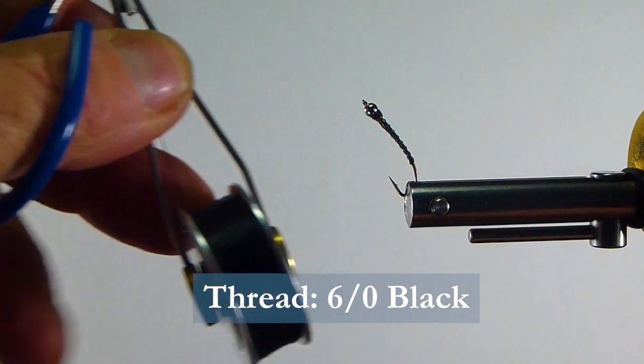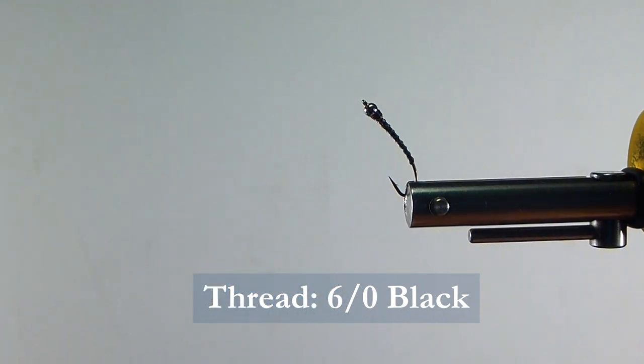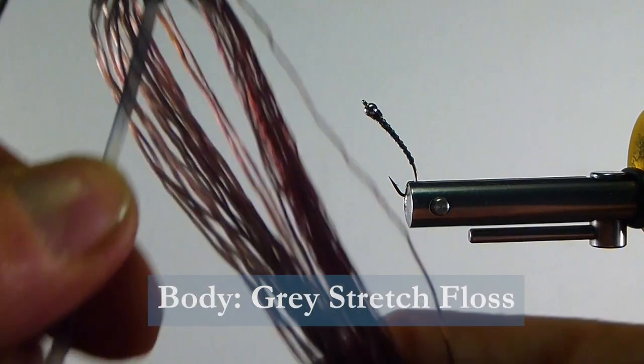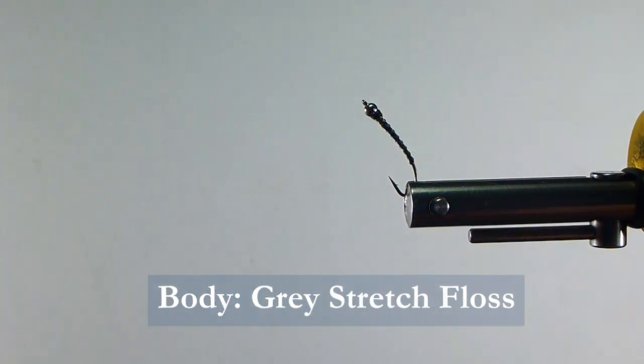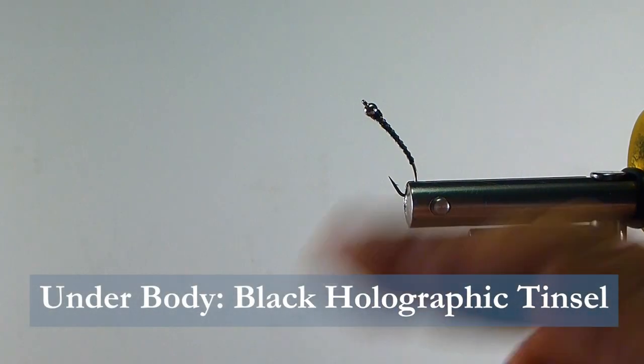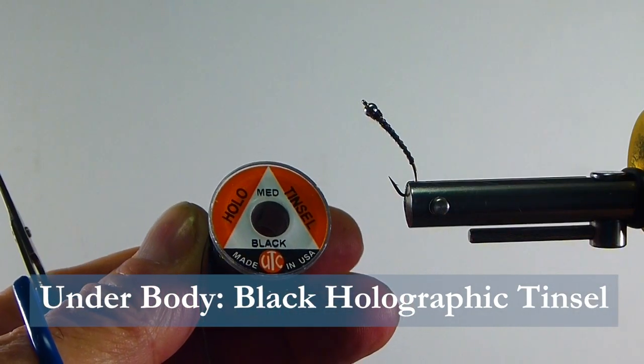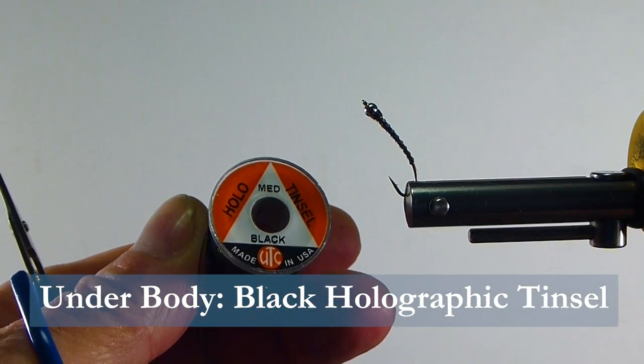The thread I'm going to be using is some 6-0 black thread. The body I'm going to be using is some gray stretch floss. And the underbody I'm going to be using is some holographic tinsel, size medium in black.